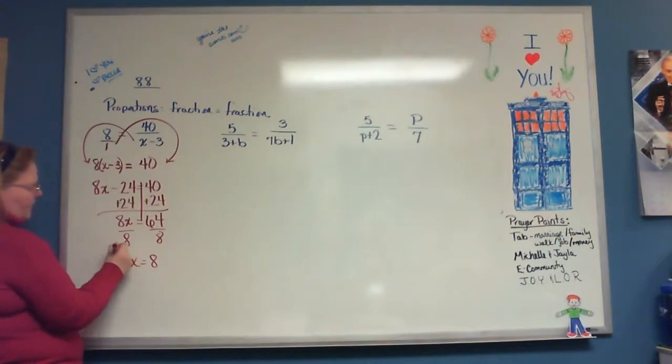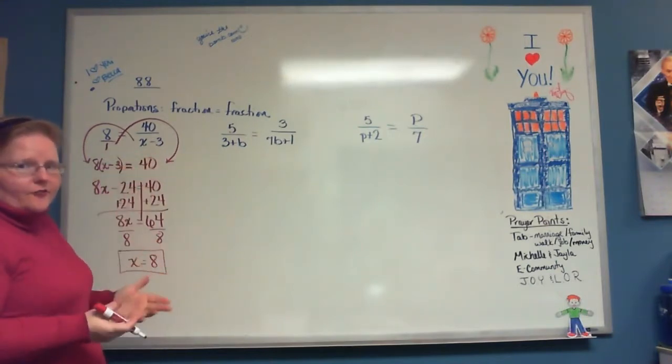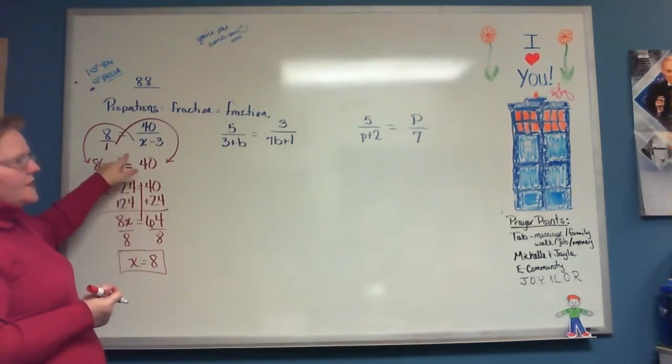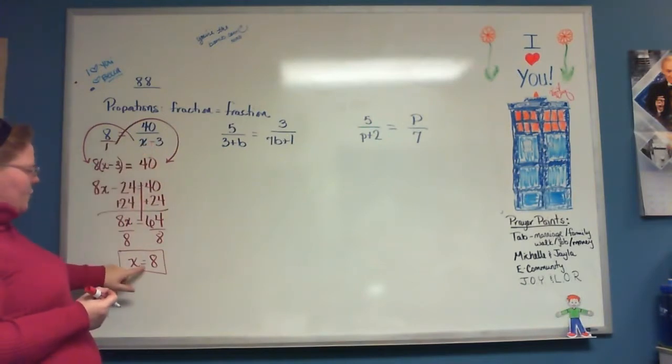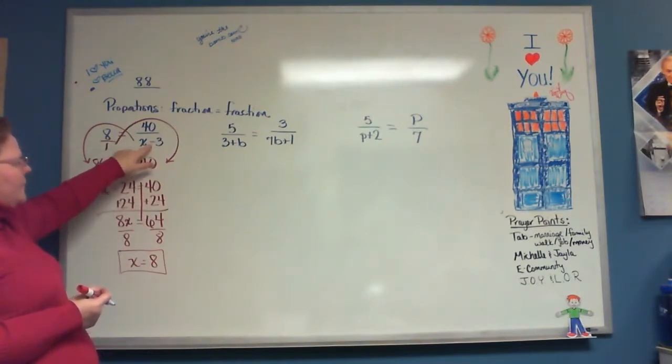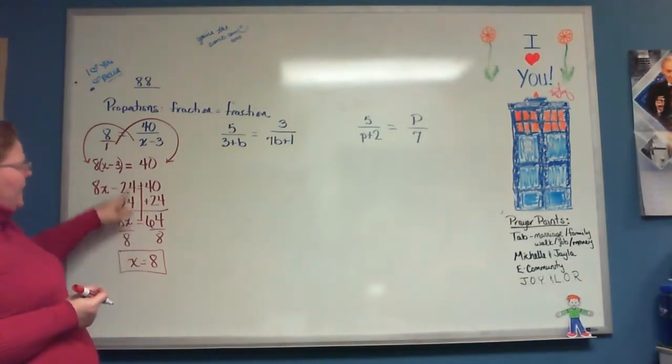Now, we started off with a fraction equal to a fraction. So because we have that fraction, now we have to check all of our answers to make sure it's not going to give us something we can't have. So we talked before about how you couldn't have a 0 in the bottom of your fraction. So I need to make sure that if I plug an 8 in up here, I don't get a 0 on the bottom of either of my fractions. Because if I do, that means that that's not really the answer.